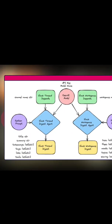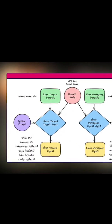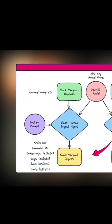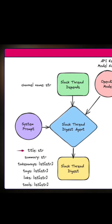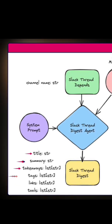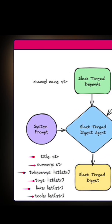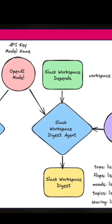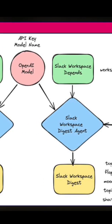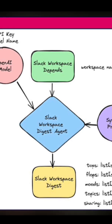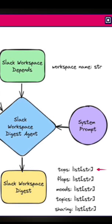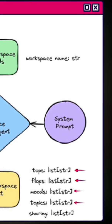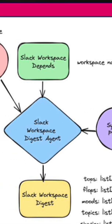And outputs. We get two main outputs. The Slack thread digest is a summary of the Slack thread including title, summary, takeaway, tags, links, and tools mentioned. On the other side we've got the Slack workspace digest — a broader analysis of the workspace highlighting top topics, flops, moods, overall topics, and different trends.